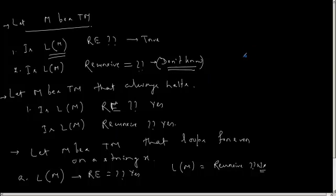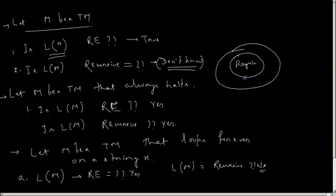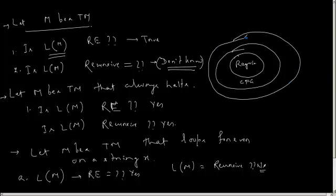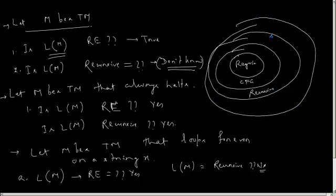In a Venn diagram, we have regular language, then another class of language called CFG, then recursive, and then recursively enumerable.